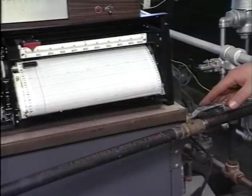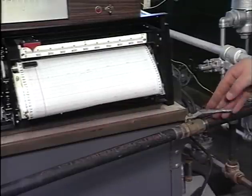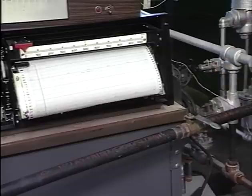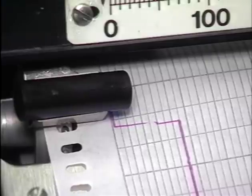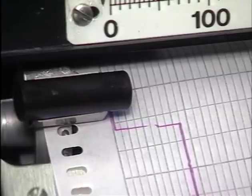By closing the valve slowly, the velocity of the water is reduced before the column is stopped. Since the momentum of the water is decreased gradually, damaging water hammer will not be produced.